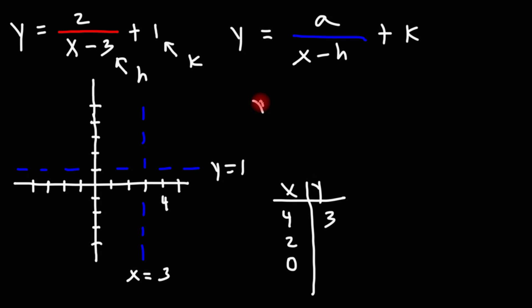If I plug in x equals 2, we would get this. So 2 minus 3 is negative 1. 2 over negative 1 is negative 2. Negative 2 plus 1 is negative 1.